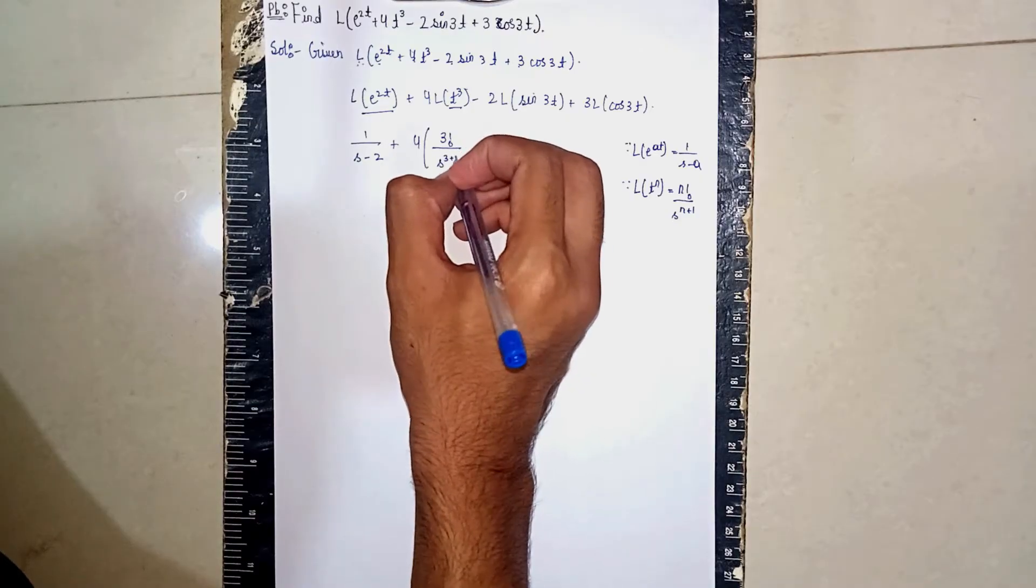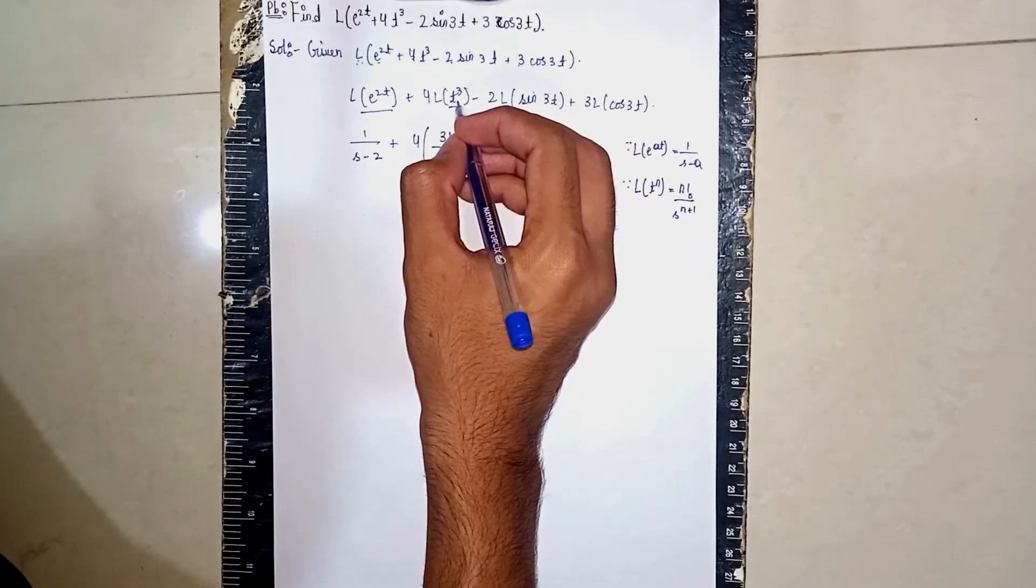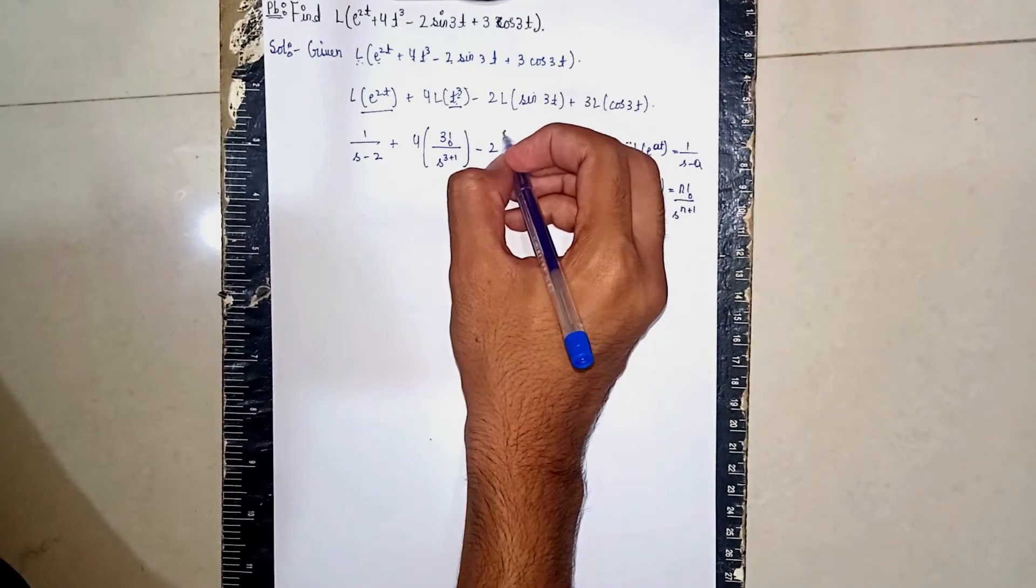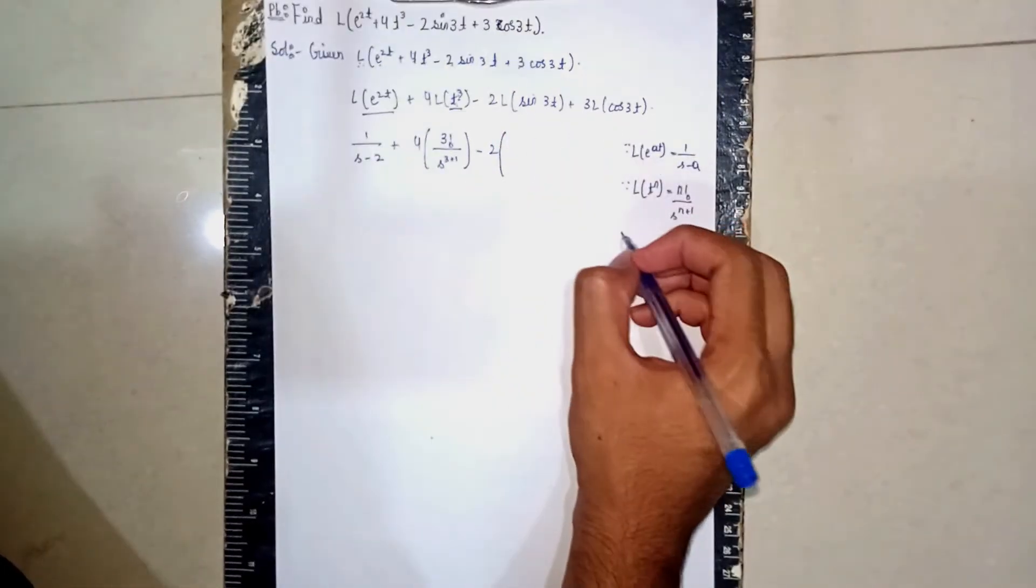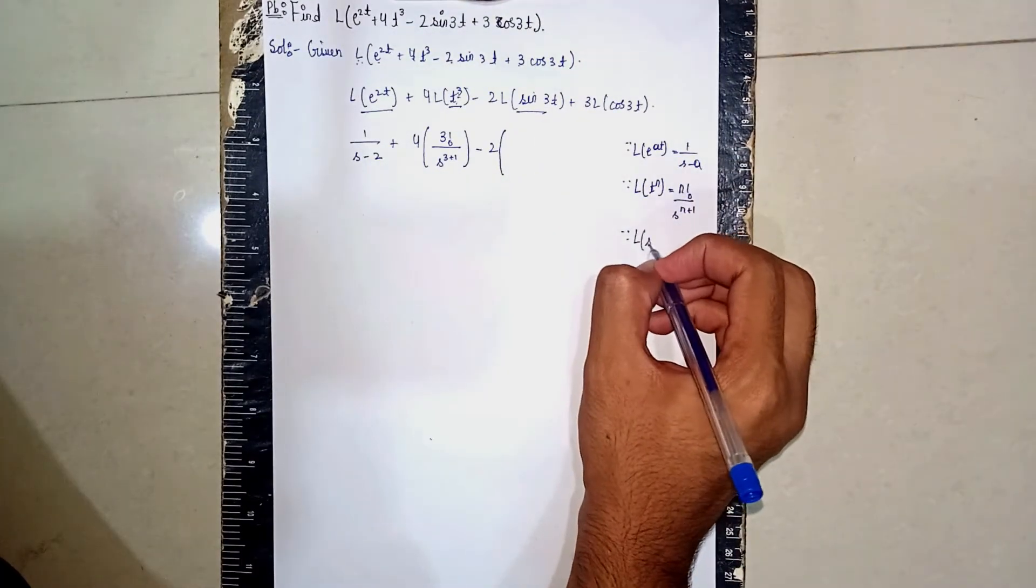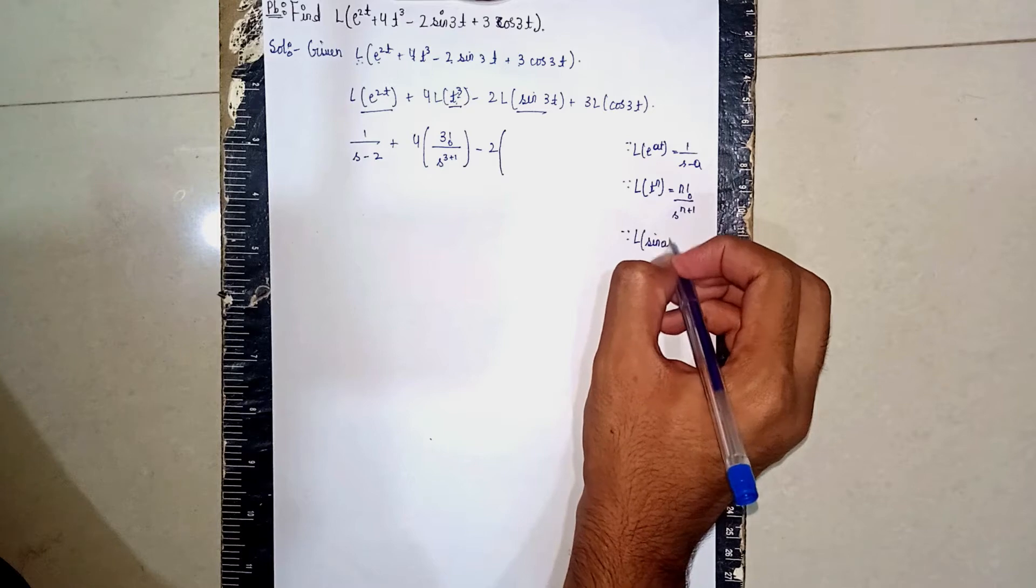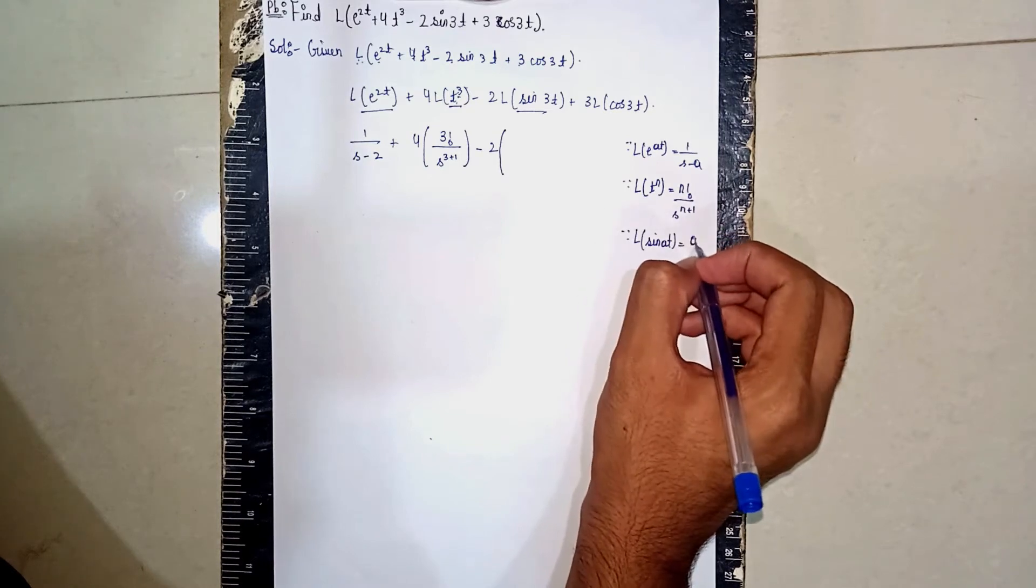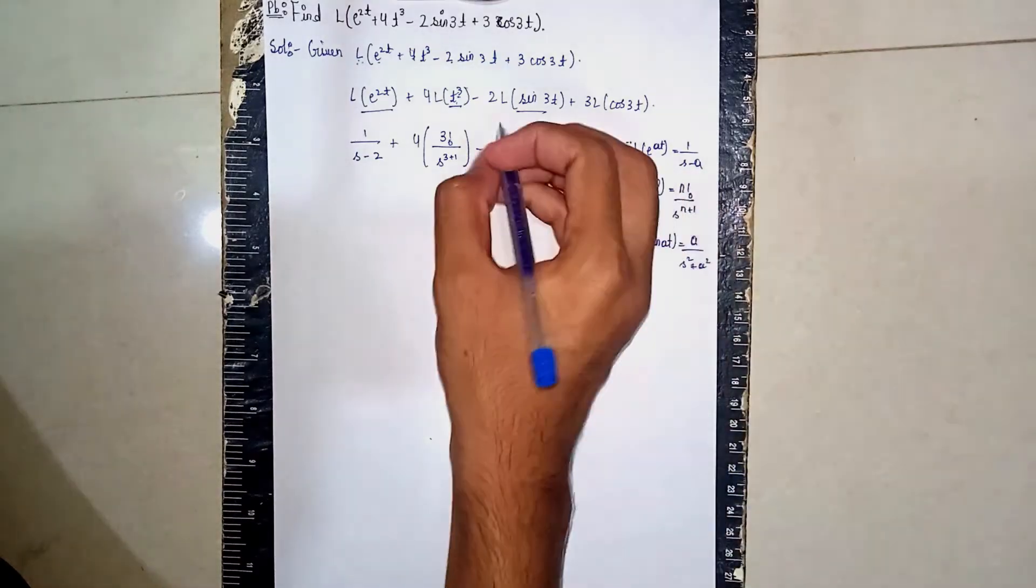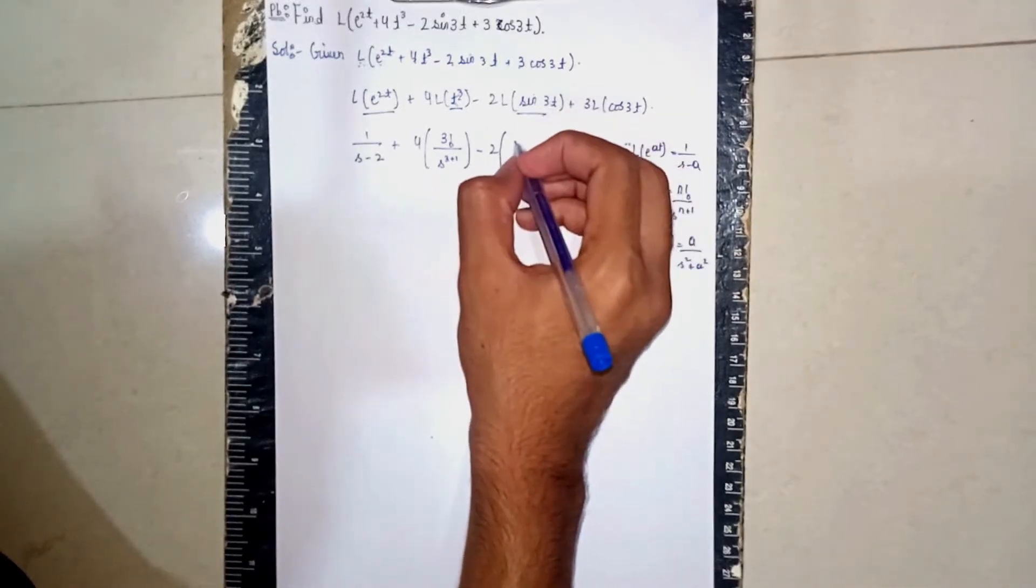Then here n is 3. Then minus 2 outside, then open the bracket. Now the formula here: Laplace of sin(at) is equal to a/(s^2 + a^2). So it will become a is 3, so 3/(s^2 + 3^2). Now close the bracket.